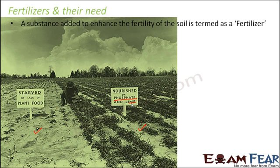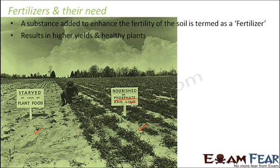The fertilizer could be a natural fertilizer or it could be a chemical fertilizer. Any chemical which you add to the soil will solve its purpose, but at the same time it can cause some harm to the plant and also to the animals which consume those plants. Use of fertilizer results in higher yields and healthy plants, and that is why we use them — productivity increases and the plants are healthier, so we do not get diseased plants.